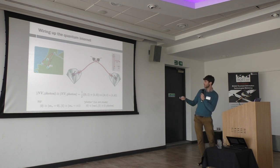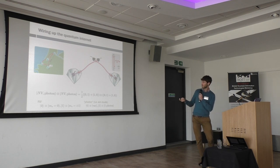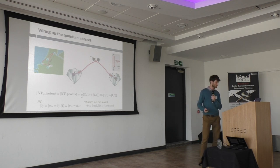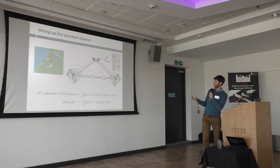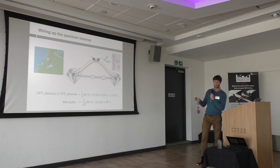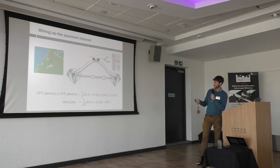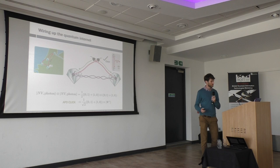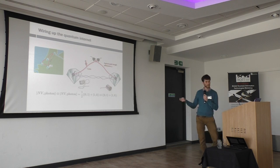We can do this on both sides, giving us a product state of two spin-photon entangled pairs. We then collect the photons and send them to a central beam splitter station. If we get exactly one click, we know that one of the NVs had to be in the bright state while the other was in the dark state, but because of the beam splitter we don't know which one — so this click projects us into an entangled state.